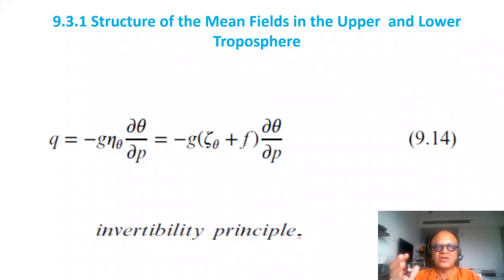Potential vorticity has many interesting properties that make it such a good tracer for dynamics. Look at the structure of the mean flow fields in the upper and lower troposphere starting with the isentropic potential vorticity.